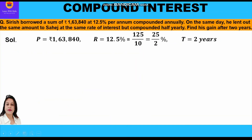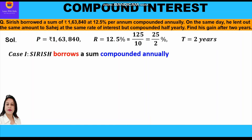Now let's start with the solution. Principal is rupees 1,63,840. Rate of interest is 12.5 percent, which we convert to a fraction: 125/10 = 25/2 percent (dividing numerator and denominator by 5). Time period is 2 years. We shall now start with the first case where Sirish borrows a sum compounded annually.